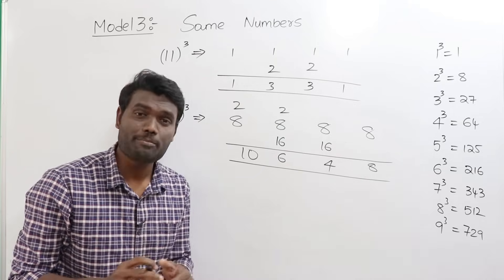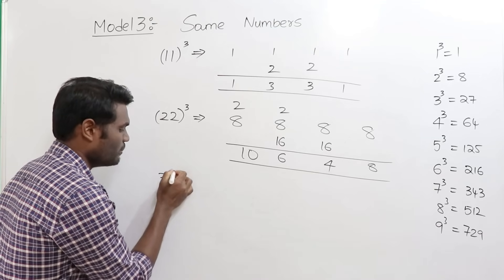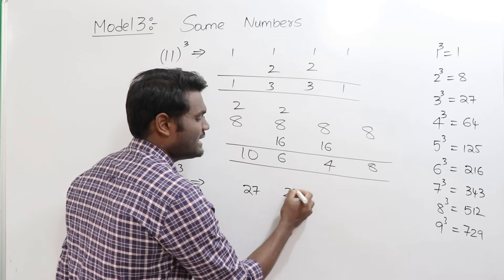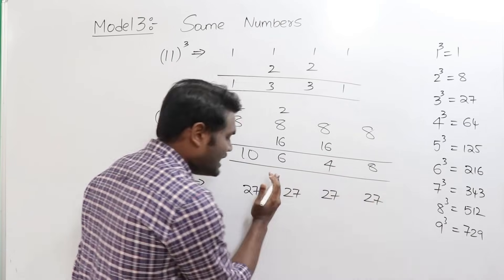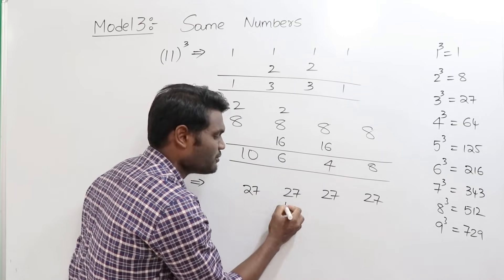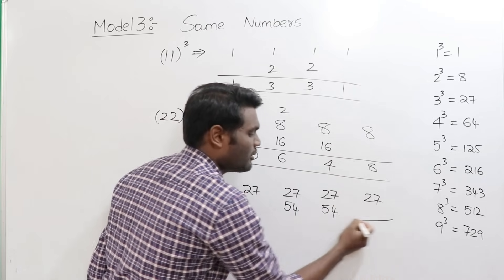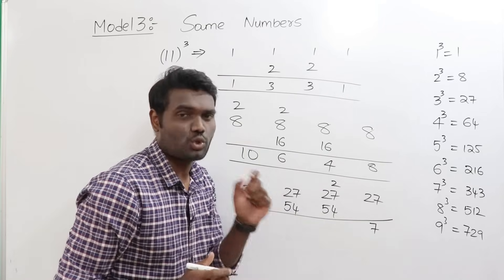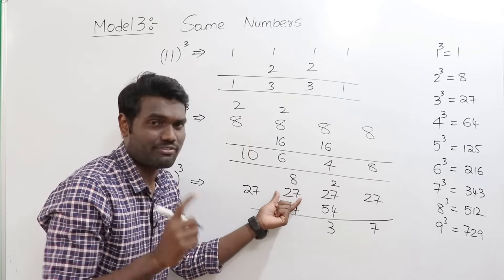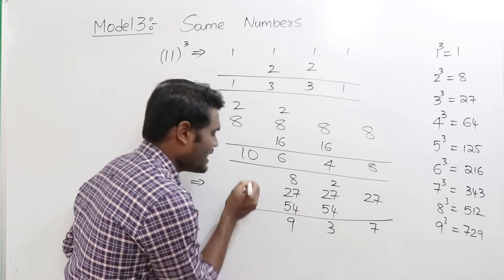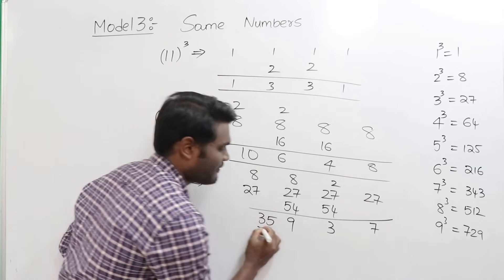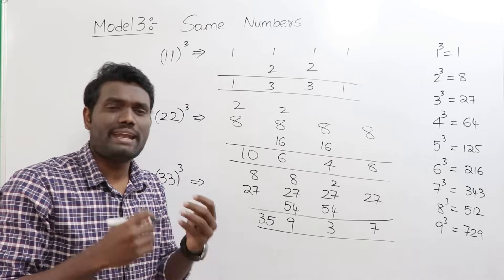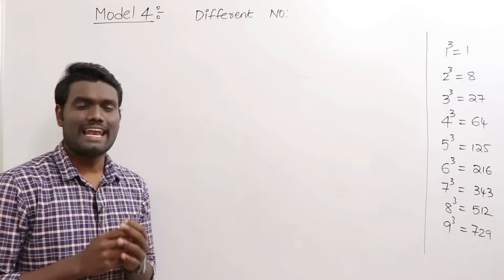If you're enjoying this, give me a thumbs up! Let's try 33 cubed. Cube the digit: 3 cubed is 27. Write it four times: 27, 27, 27, 27. Leave first and last, double the middle: double 27 is 54, double 27 is 54. Adding: 27 — write 7, carry 8 (treating carry as 2 from 27, so carry is 2... actually carry is 2); 54 plus 27 is 81, plus carry 2 is 89 — write 9, carry 8; 27 plus 8 is 35. So 33 cubed equals 35937. You can practice 44 and 55 cubed similarly.